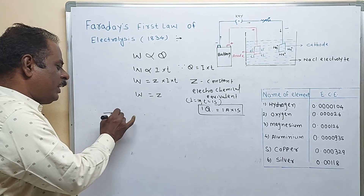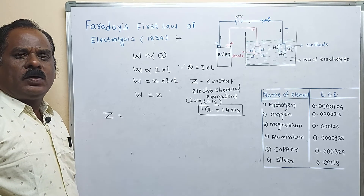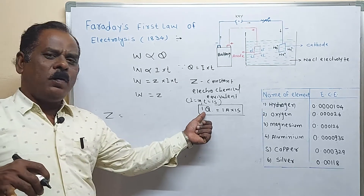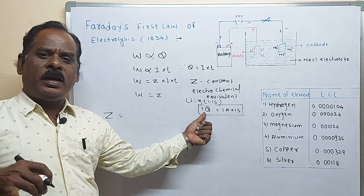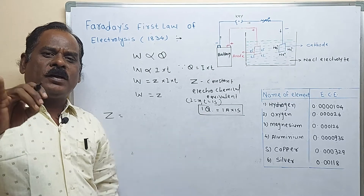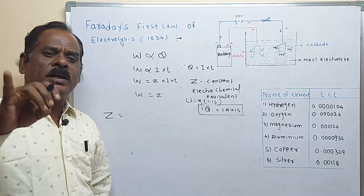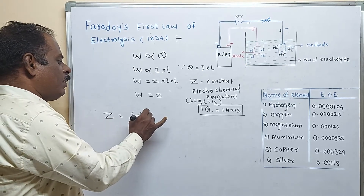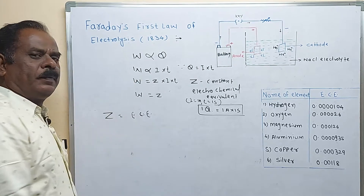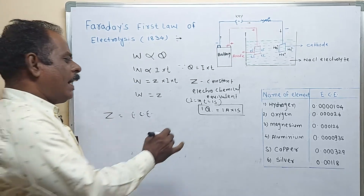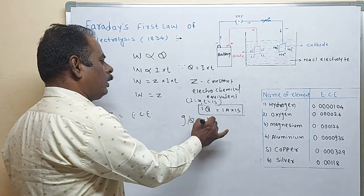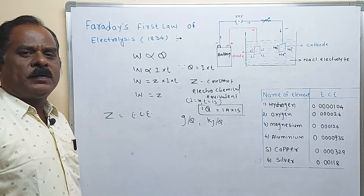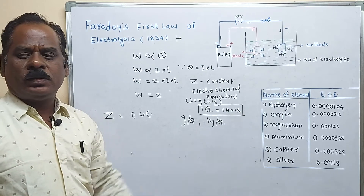How do you define Z? Electrochemical equivalent (Z): when you pass one Coulomb of electricity through an electrolytic solution, the amount of substance deposited or liberated on the respective electrode is called the electrochemical equivalent. It is measured in grams per Coulomb or kilograms per Coulomb. The values for some substances are given on the blackboard.